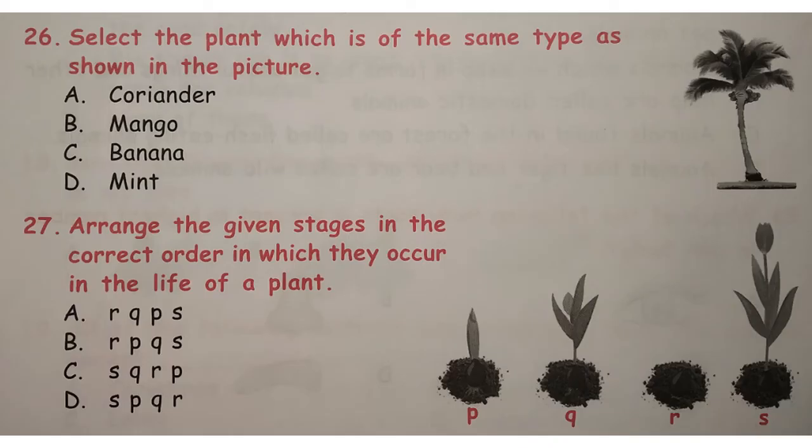Select the plant which is of the same type as shown in the picture. The correct answer is option B — mango.